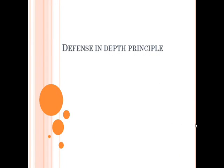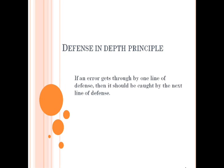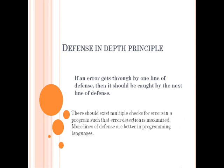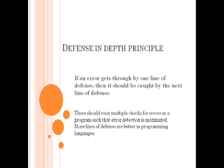Our next principle is the defense in depth principle. The definition says: if an error gets through one line of defense, then it should be caught by the next line of defense. If you get an error during type checking or syntax checking, it should be caught at the first stage. If the program is unable to catch that error at the first stage, it may become a big problem — increasing the cost of maintenance and reducing the quality of production.